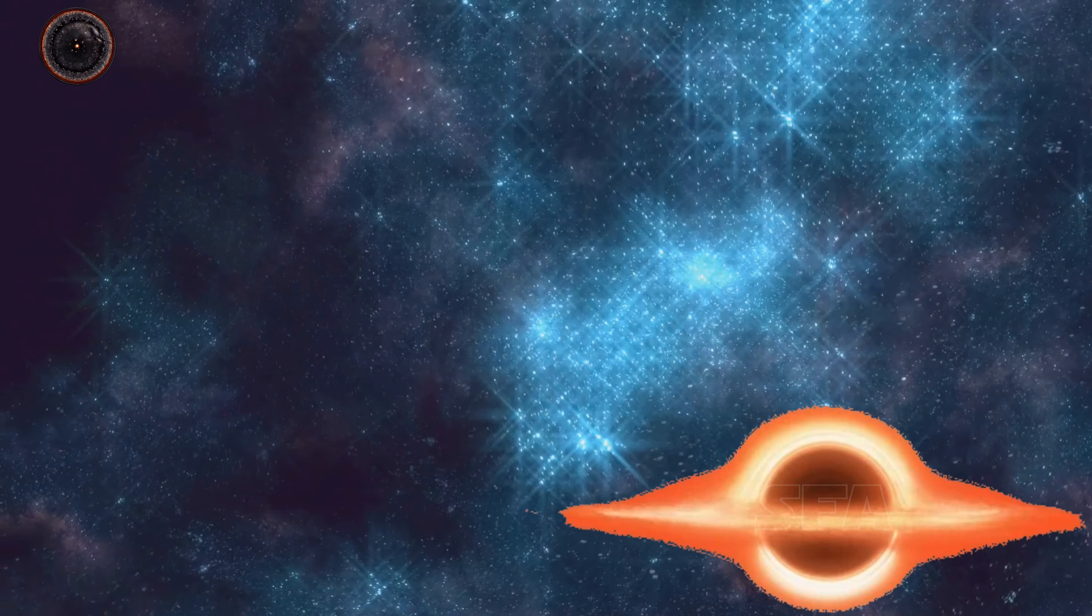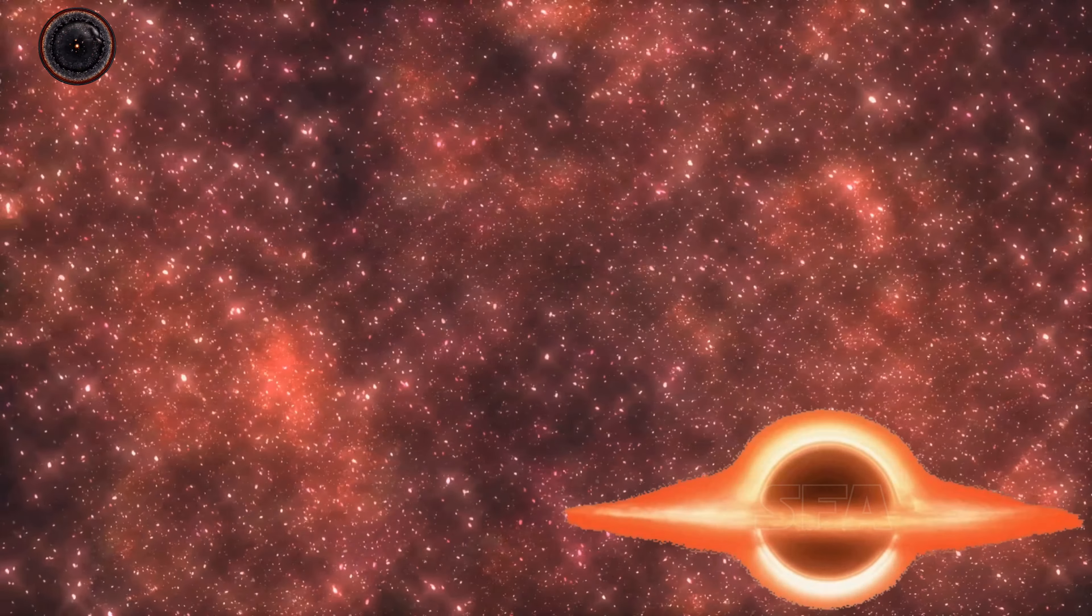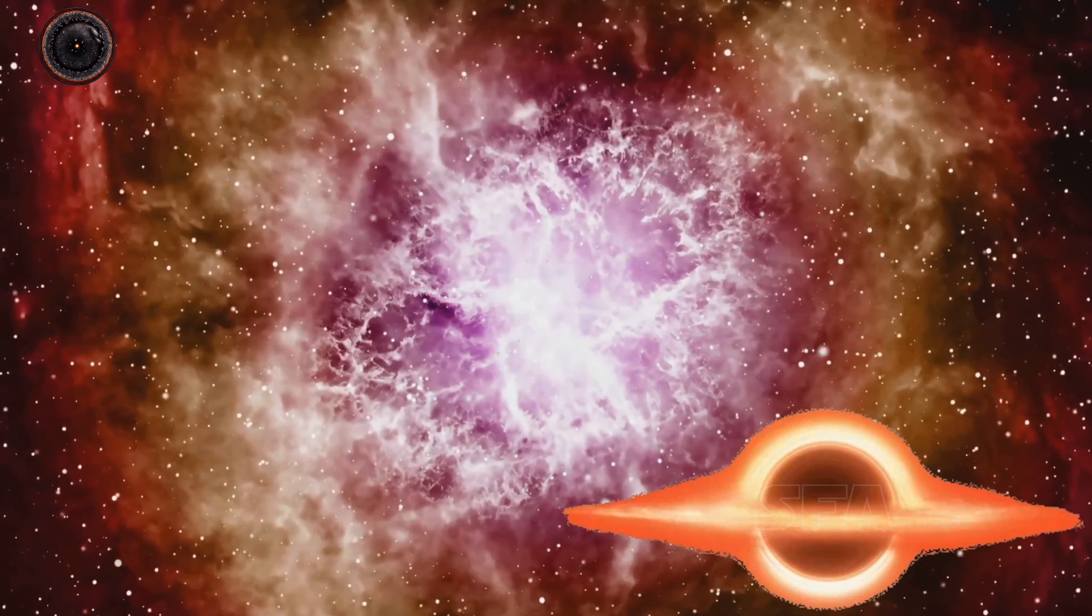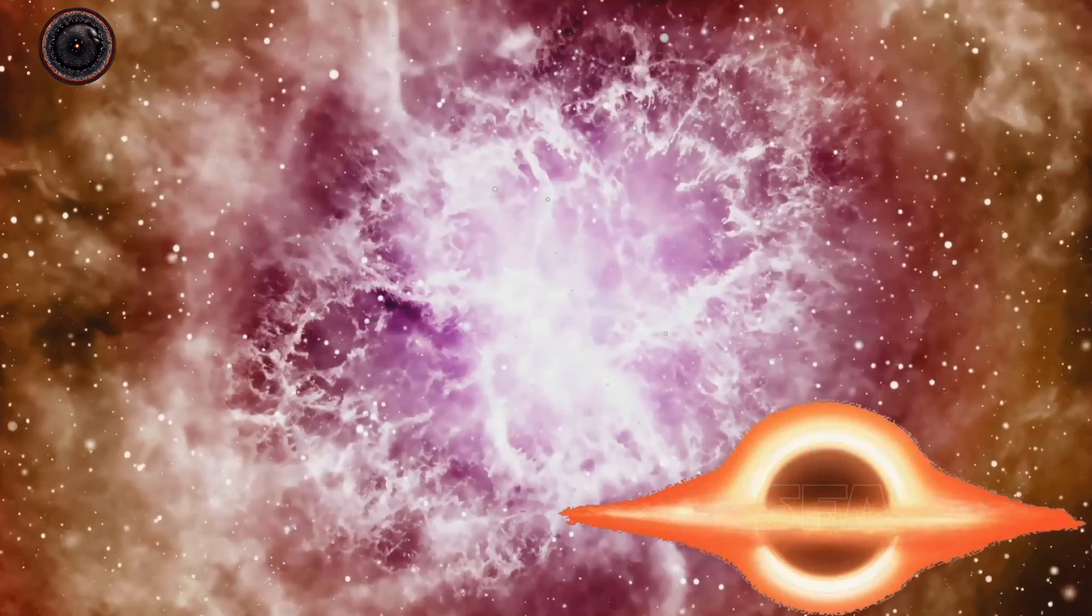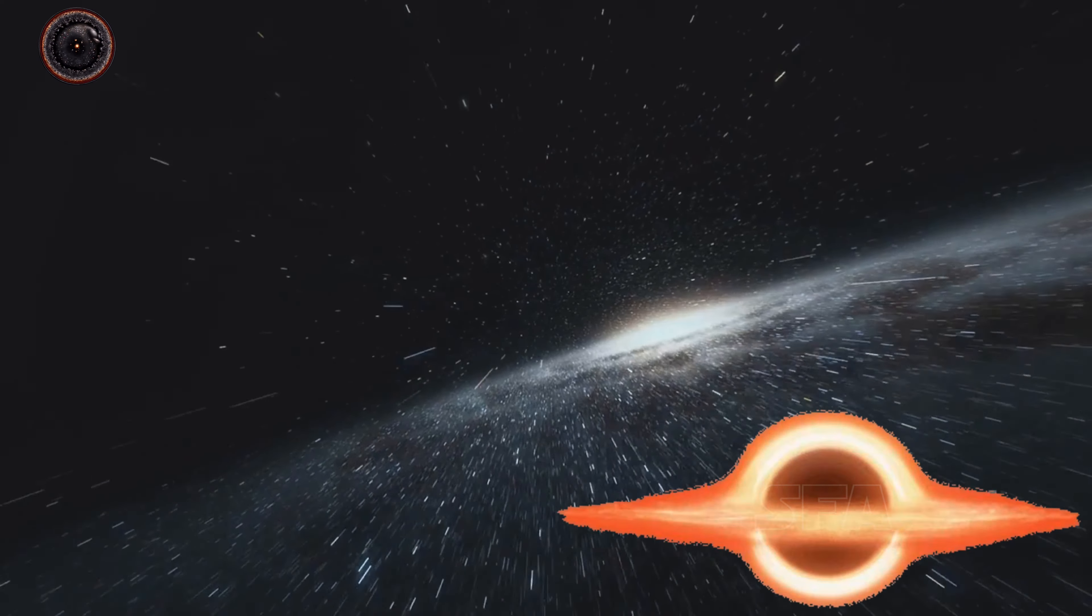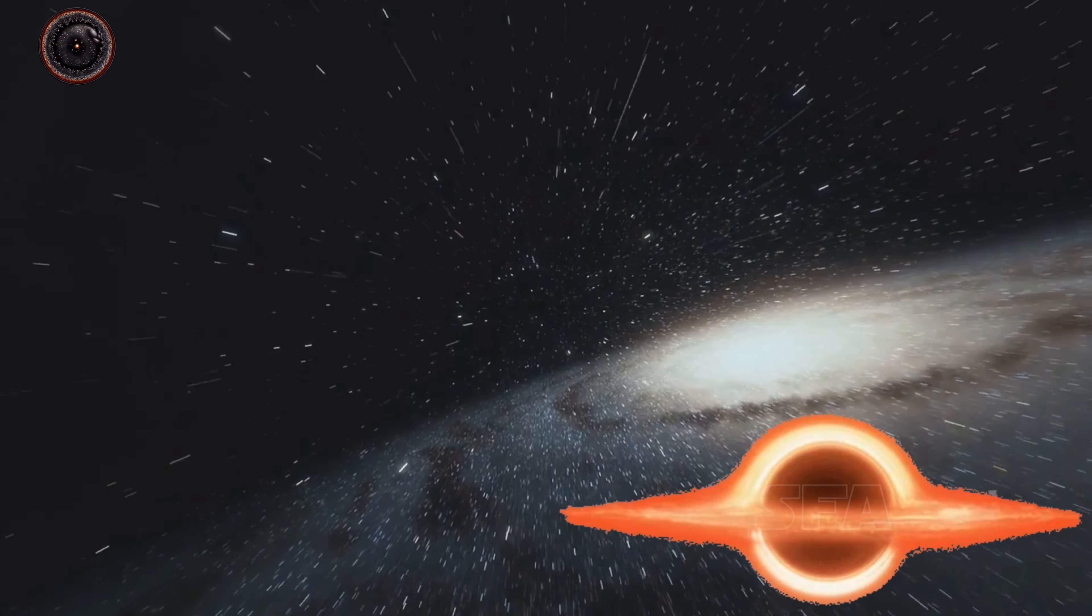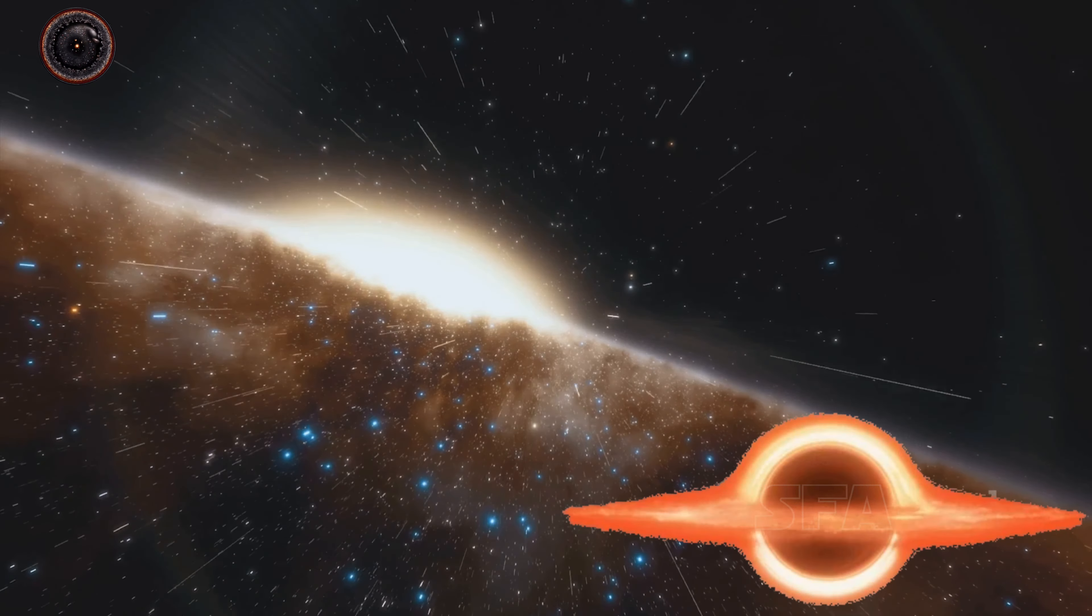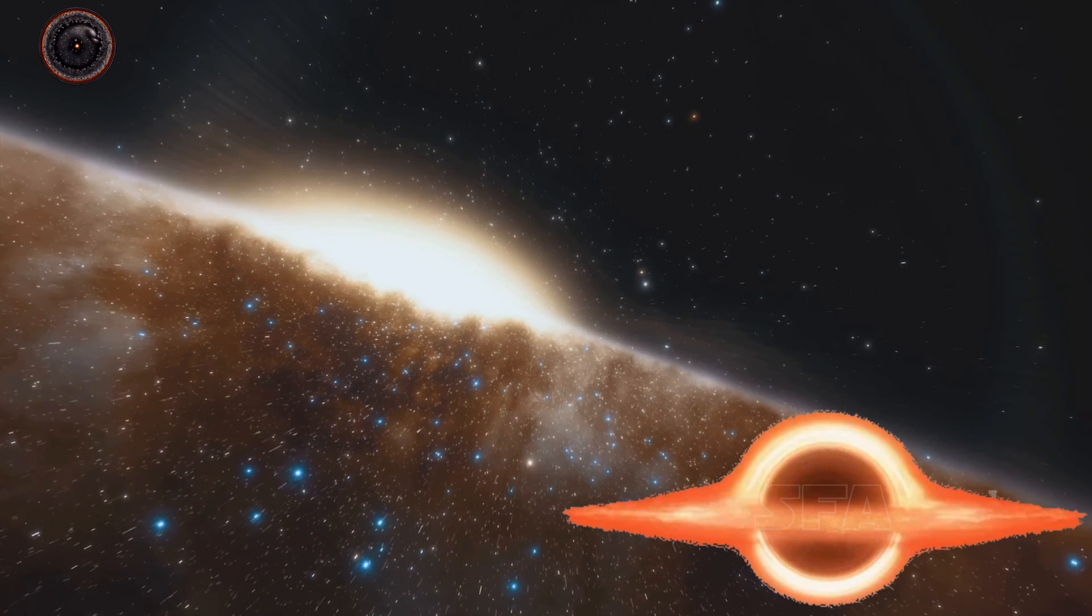The universe is not just static, it's expanding, getting bigger and bigger all the time. The light from these galaxies, on its long journey to reach us, gets stretched out, just like the fabric of the universe. This cosmic speedometer provides a measure of the universe's expansion rate. By looking at how much the light from distant galaxies has been redshifted, we can estimate how fast they're moving away from us. This in turn gives us an idea of how quickly the universe is expanding.